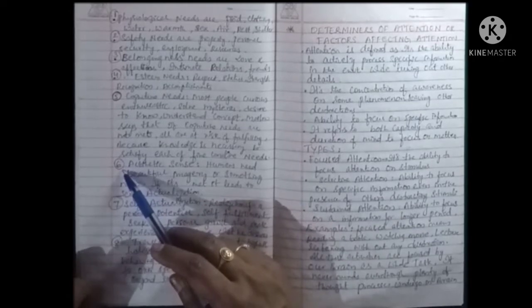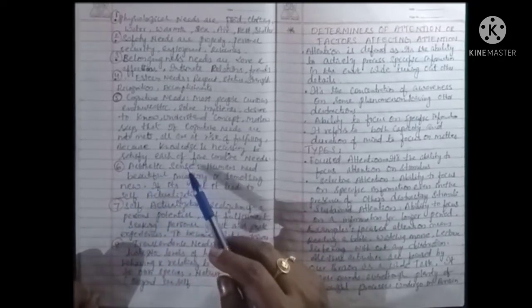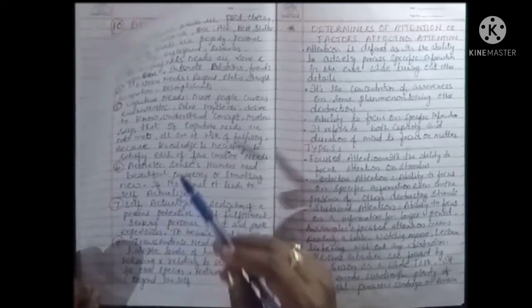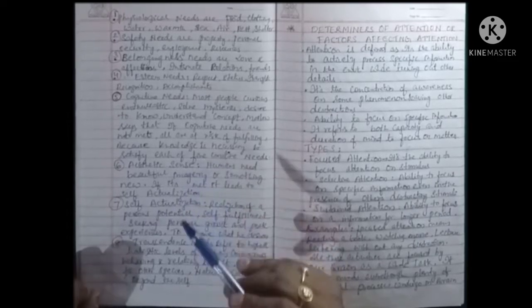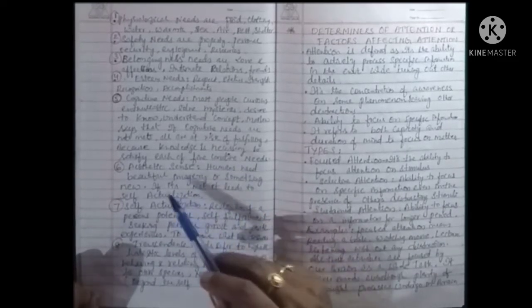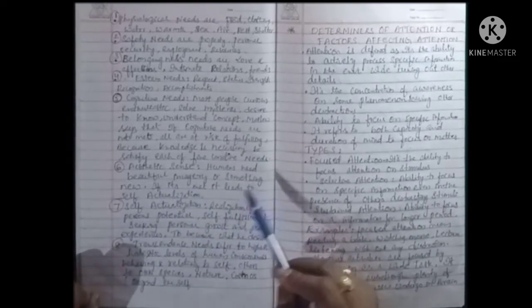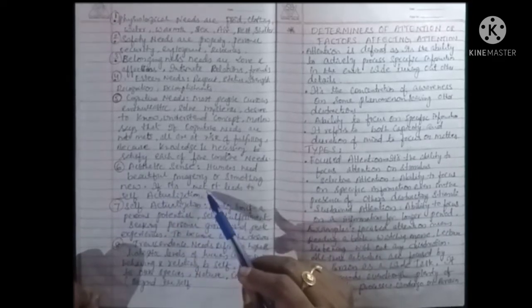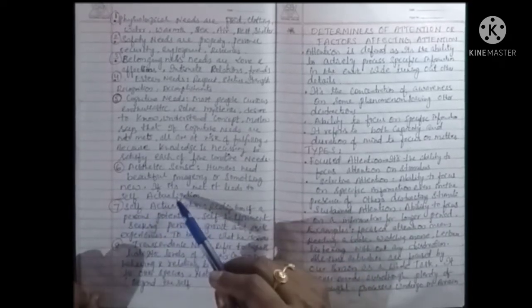The sixth level is aesthetic sense. It is nothing but appreciation of beauty or sense for beauty. Humans need beautiful imagery or something new. If it is met, it leads to self-actualization process.